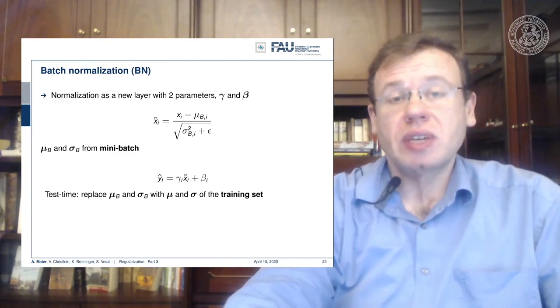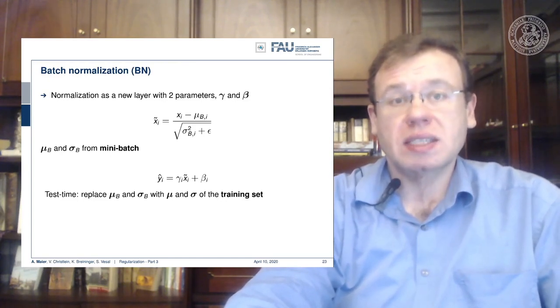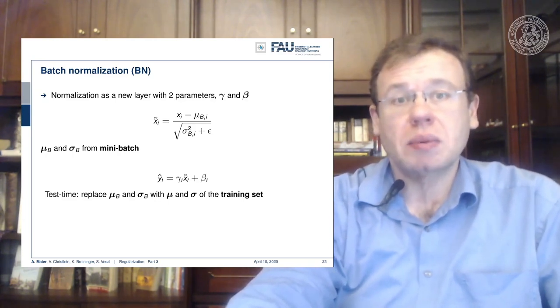So this nice feature can of course only be done during the training. If you want to move on towards test time, you do after you finish the training, you compute the mean and the standard deviation in the batch normalization layer once and you keep it then constant for all future applications of the network.